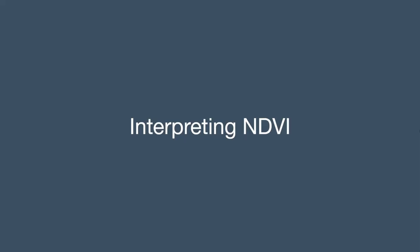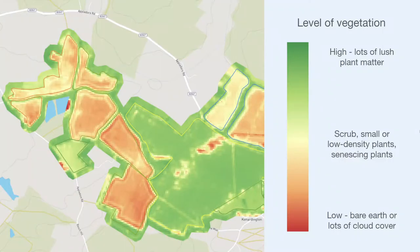Interpreting NDVI imagery. NDVI stands for Normalised Difference Vegetation Index and shows an estimate of vegetation cover. It is convenient for tracking the growth rate of plants and monitoring any changes to them. On Field Margin, we use a scale from red to green to visualise this. Red indicates bare earth and dark green indicates high levels of vegetation. The colours in between, from orange through yellow to light green, show increasing amounts of green plant matter.